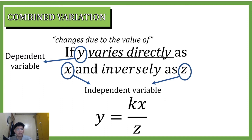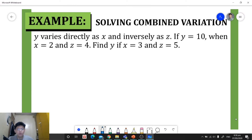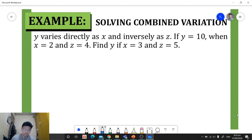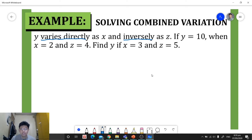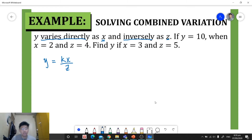Let's have an example in solving combined variation. y varies directly as x and inversely as z. If y is equal to 10 when x is equal to 2 and z is equal to 4, find y if x is 3 and z is 5. We translate this phrase into an equation: y is equal to the constant of variation times x divided by z.